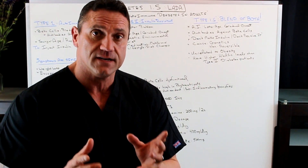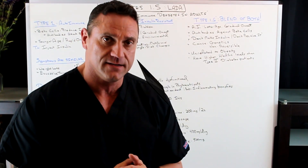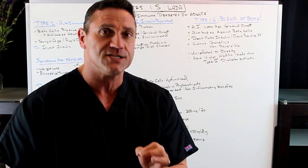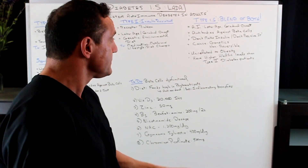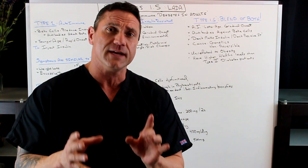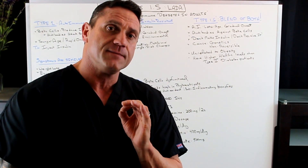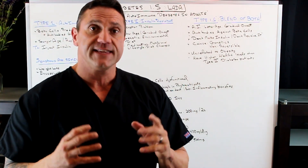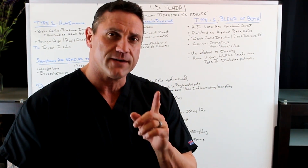Like type 1, diabetes 1.5 is non-reversible — you cannot change it or cure it with diet alone. Also, type 1.5 is unrelated to obesity. Typically type 2 diabetes is related to obesity and sugar, but type 1.5 is often not. One of the markers when doing blood labs is the A1C — the hemoglobin A1C, which is a measure of 90 days. With diabetes 1.5, A1C levels are abnormally higher than in a type 2 diabetic. This is red flag number one.